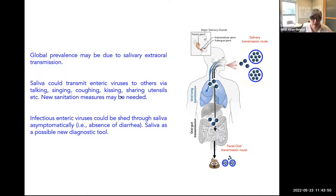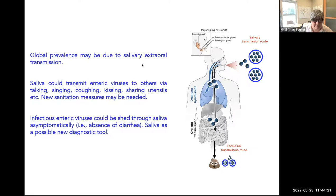The data so far has hopefully convinced you that, at least in animals, saliva is a transmission route for these enteric viruses. Thinking about that map of how prevalent these infections are around the world — a prevalence that doesn't seem to match the level of sanitation practices based on fecal-oral transmission — this may be due to salivary extra-oral transmission. Saliva can transmit these viruses to others via talking, singing, coughing, kissing, sharing utensils — all of these produce salivary droplets in the air. So new sanitation measures may be needed to prevent this form of transmission.